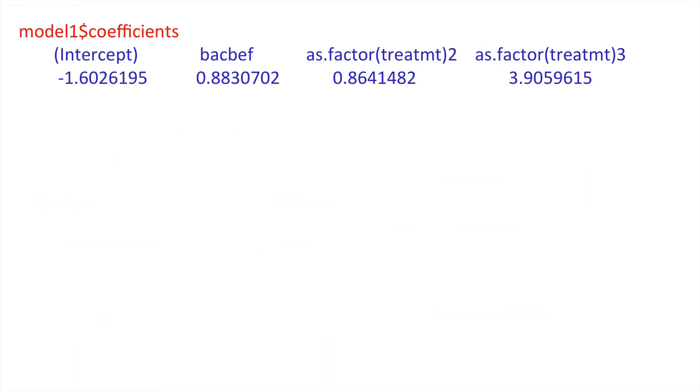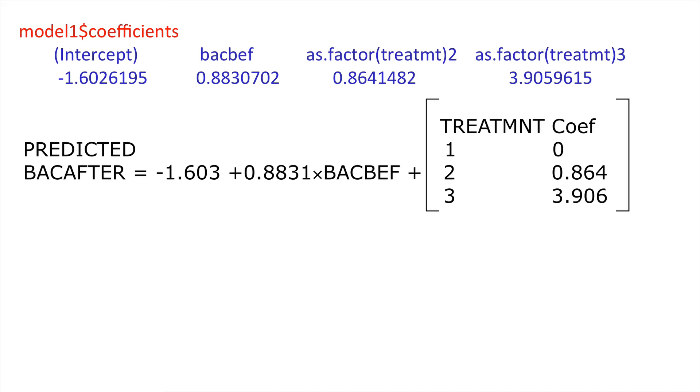Let's have a look at the model coefficients. We can simply call up coef for that model one and here is the reconstructed model based on those coefficients. We've got an intercept of minus 1.603. There's the gradient and then we have a degree of aliasing. The first treatment level is actually incorporated, subsumed within the intercept so we've only got treatment levels 2 and 3 which is why they're listed out here. That's the best fit equation.